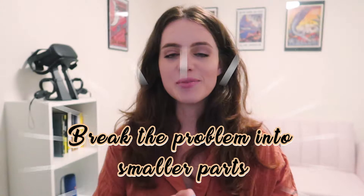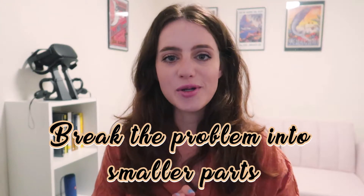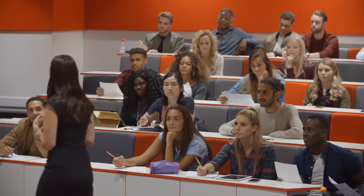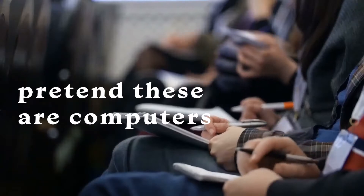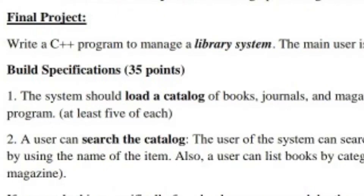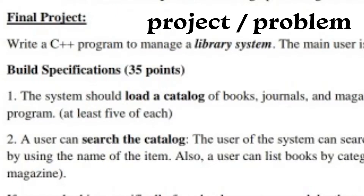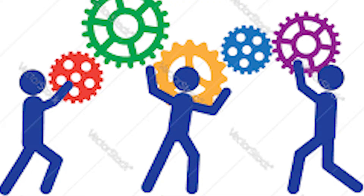Step number two is break the problem into smaller parts and solve it piece by piece. This was the golden rule in all the theoretical and applied programming classes I took in college. You're going to get a big problem — like the ones I was describing at the beginning of the video — and it's going to require lots of moving pieces. You're going to want to take that problem and chop it up.